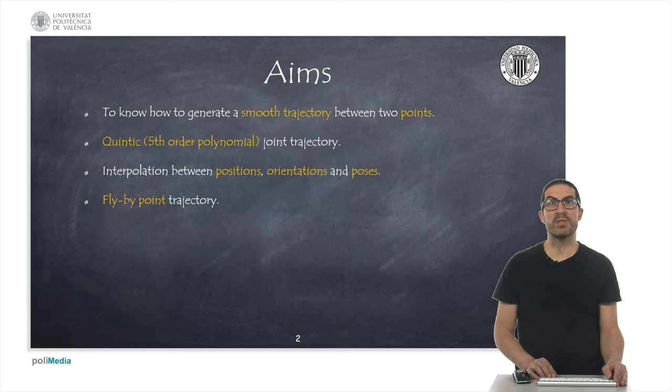The aims of the presentation are to show how to generate a smooth trajectory between two postures or poses from a 5th order polynomial equation. Then we will see how to apply this type of trajectories for joint trajectory generators, following ideas that we have already saw in a previous presentation, but in this case using a 5th order polynomial expression.